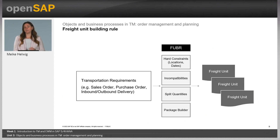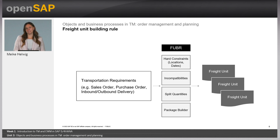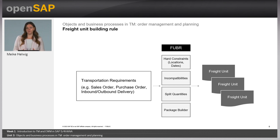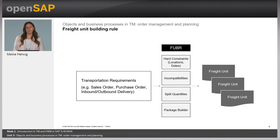What is important with the freight unit is that you can decide how it looks at the end — how the freight unit will be created based on the so-called freight unit building rule. The freight unit building rule has hard constraints like location and date, so it's always a unit which goes together from A to B at the same dates and times. On top of that, you can put into this freight unit building rule incompatibilities or split quantities. So you can say you always want to separate frozen goods from normal goods, or after 500 kilograms you want to split into separate freight units. You can also use the so-called package builder to create packages based on handling instructions or packaging instructions.